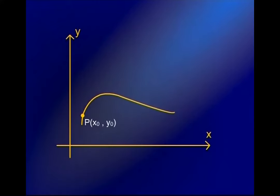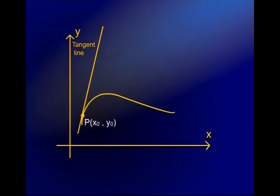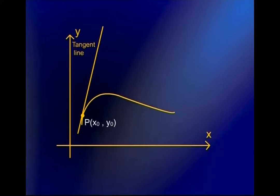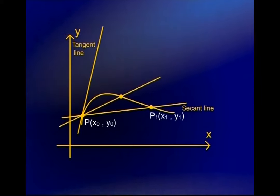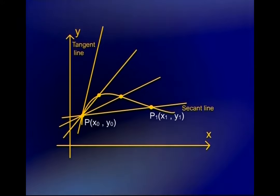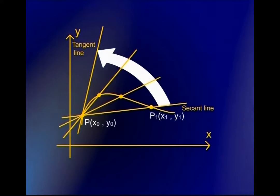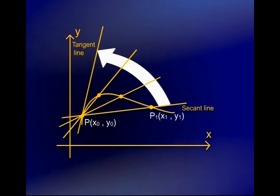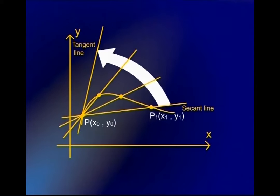Using the idea of a limit, we can define what a tangent line is. Consider a graph of a function f(x) and a point P with coordinates (x₀, y₀). We introduce a secant line — a line that crosses a curve at two points. We have a secant line through point P and another point P₁ with coordinates (x₁, y₁).